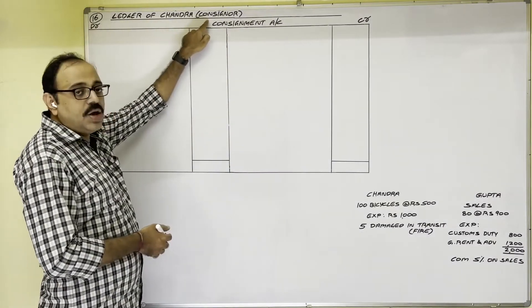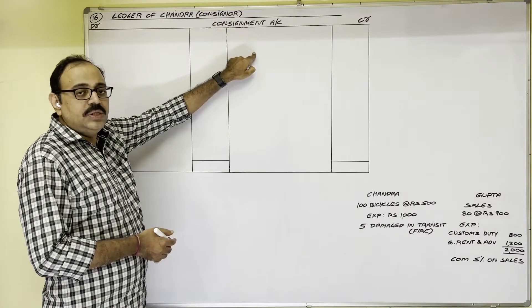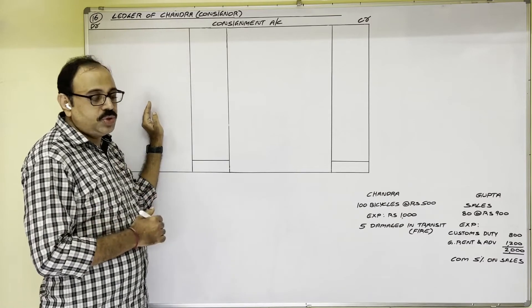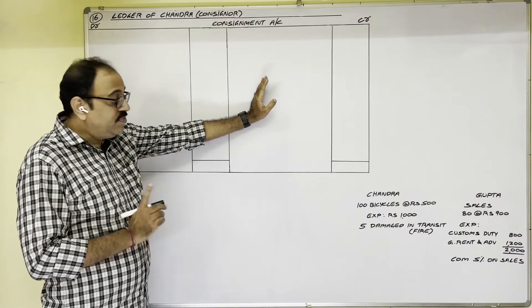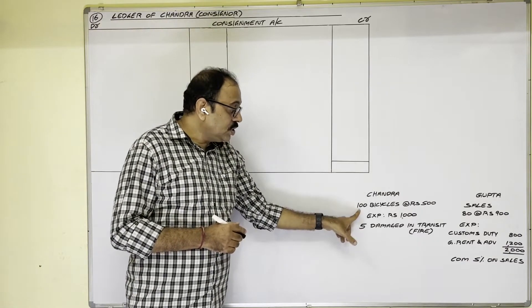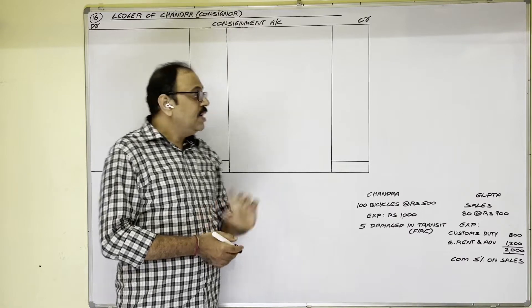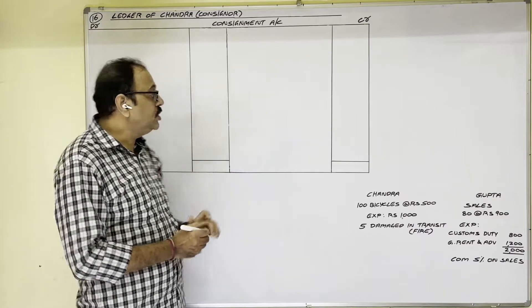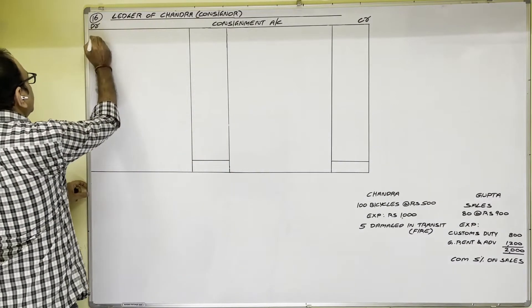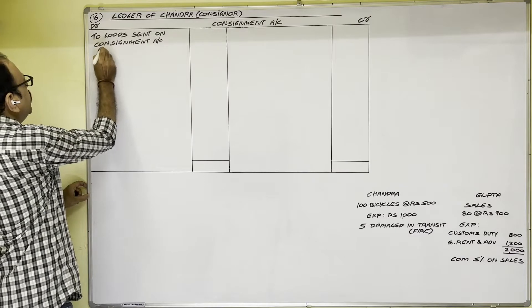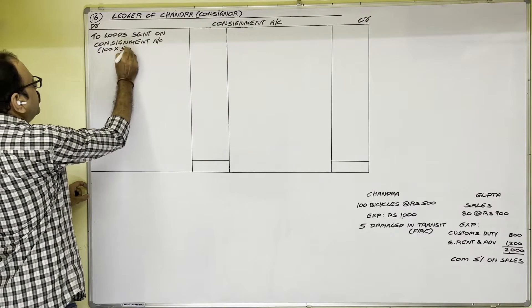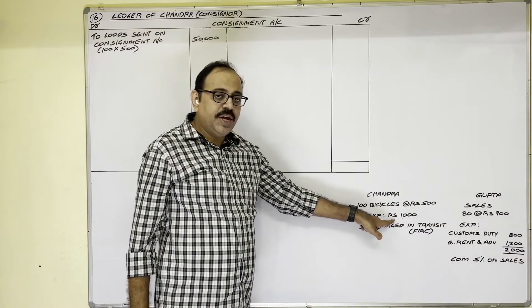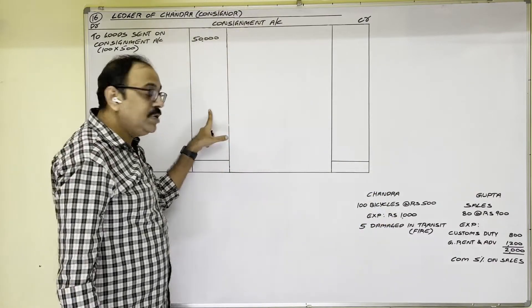In this problem we will learn how to calculate abnormal loss and what entries are required. The consignment account is a nominal account. On the debit side we show consignment-related expenses and losses; on the credit side we show incomes. First, consignor sends goods: debit consignment account with 100 bicycles × 500 rupees = 50,000 rupees (to Goods Sent on Consignment Account). Then debit Bank Account 1000 rupees for freight.